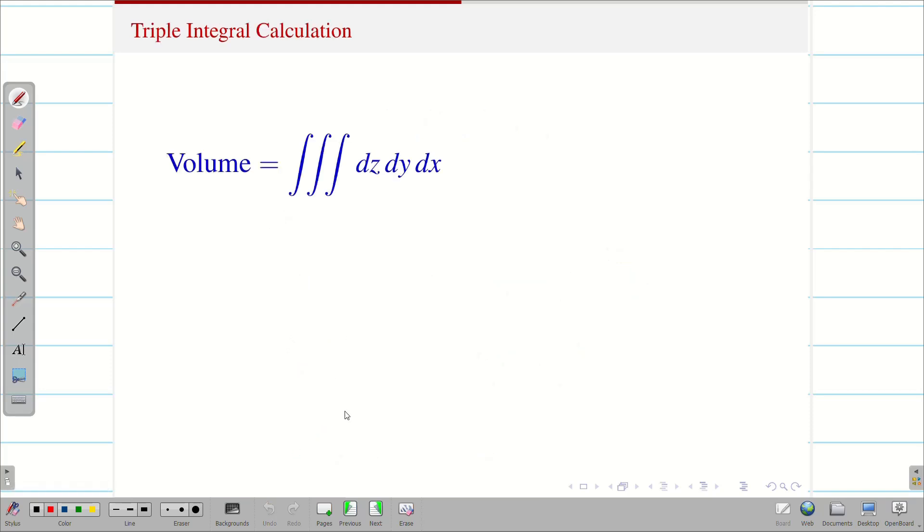Next, as I said we have to take the volume as triple integral dz dy dx. Even you can take a different order and find the limits accordingly - choice is yours. Next, we have to substitute the x, y, z limits from the previous slide. Now we get this.